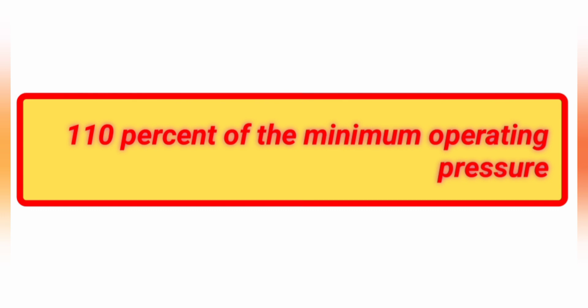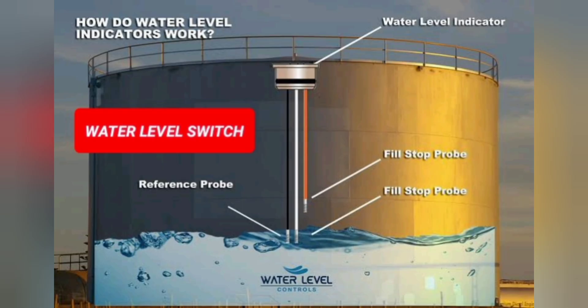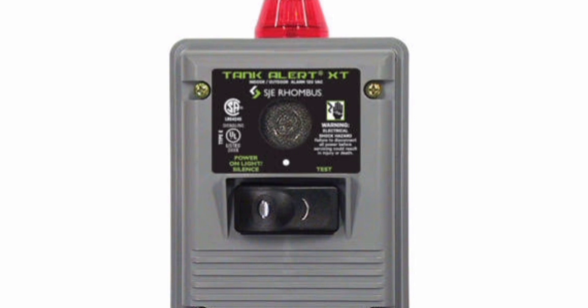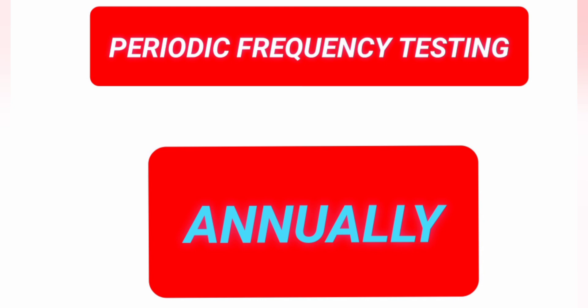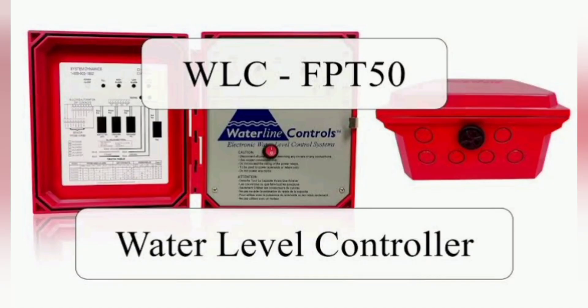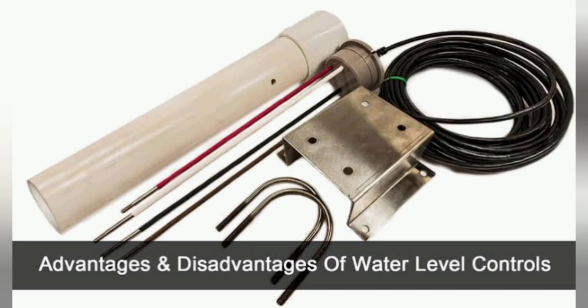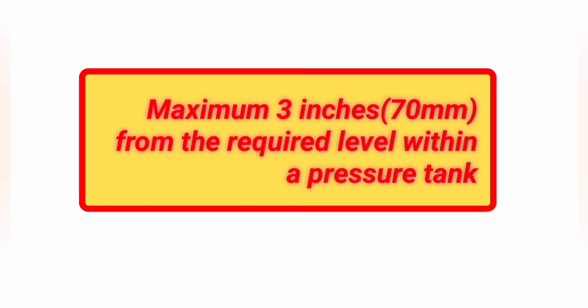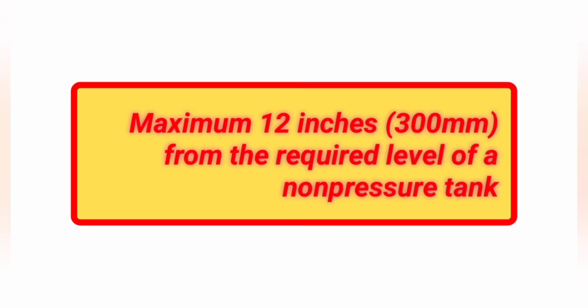Next one is water level switch. The method is to operate the switch and verify receipt of signal indicating the water level raised or lowered a maximum 3 inches (70 millimeters) from the recorded level within a pressure tank, or a maximum 12 inches (300 mm) from the recorded level of a non-pressure tank.